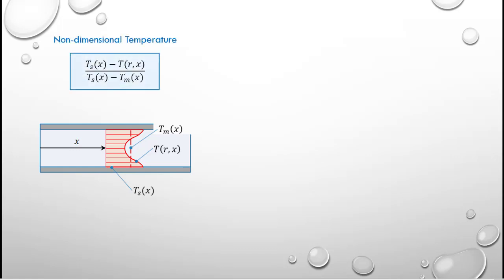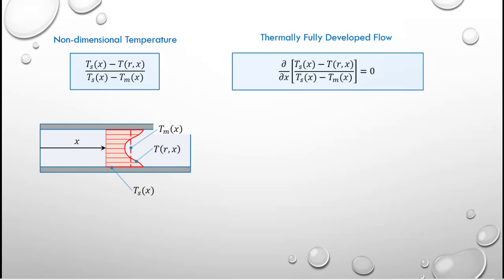In this video we will discuss what is referred to as a thermally fully developed flow. As we stated in the previous video, we have three temperatures all of which can vary in the axial direction, and a combination of these temperatures defines a non-dimensional temperature in a manner that will become clearer as we move through this process.